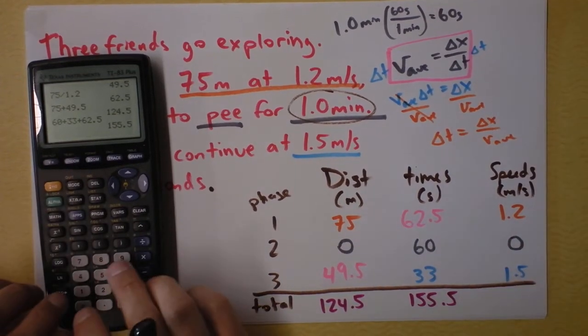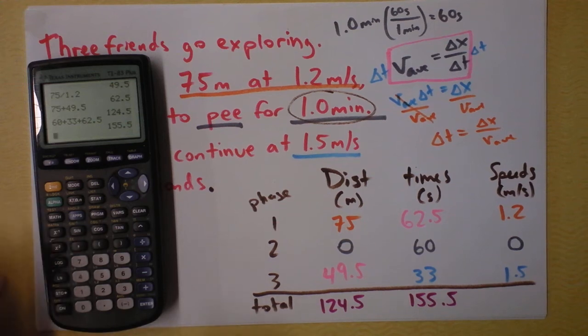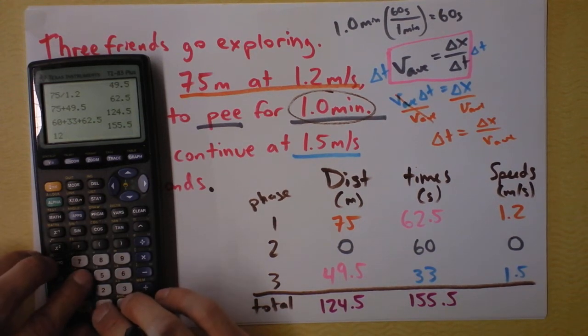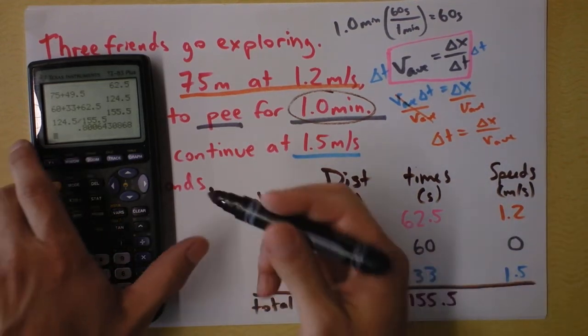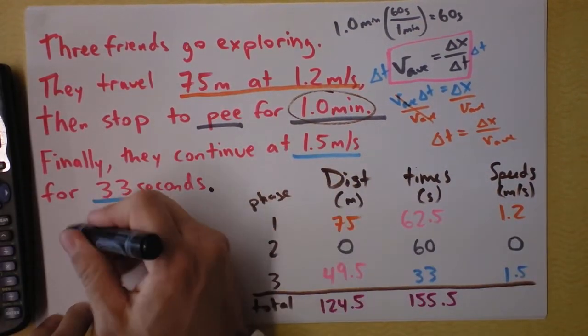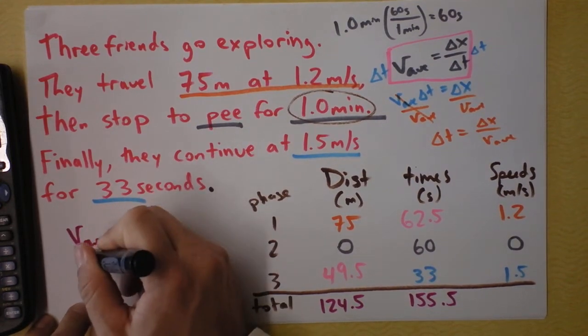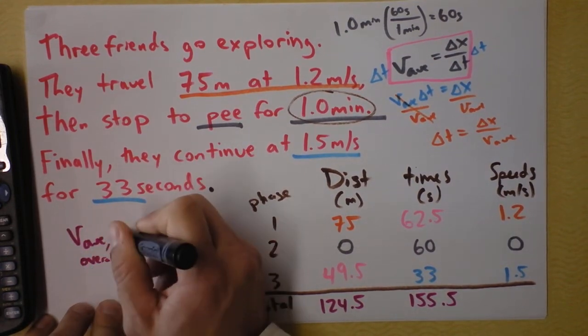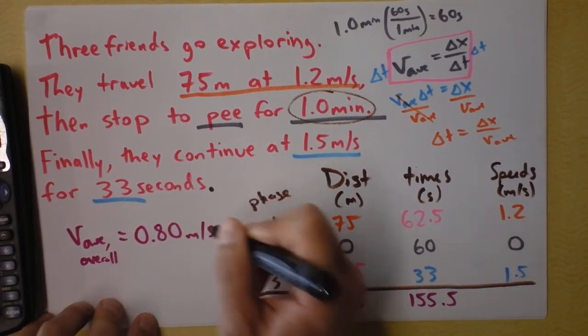So I'll divide those suckers in order to find the total, or maybe I should call it the overall average velocity, 124.5 divided by 155.5. And that gives me, what luck. I say that the average velocity, overall average velocity, is 0.80 meters per second.